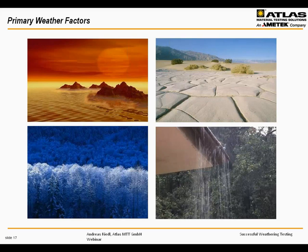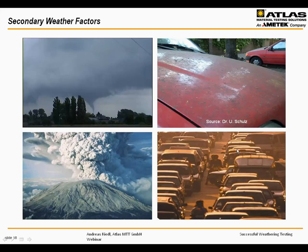Now let's look at the weather factors. We have primary and secondary weather factors. The three primary factors are: solar radiation in the UV, visible, and infrared; water in all its different physical states like dew, condensation, rain, snow, ice, and humidity; and heat including cyclic changes — heat-cold cycles, freeze-thaw cycles, and so on. All other factors are called secondary weather factors, such as biological agents like mildew, bird droppings, algae, insects, and fungi.